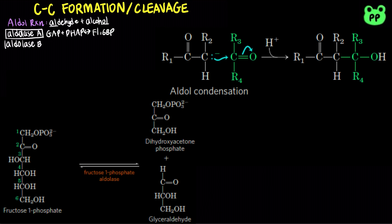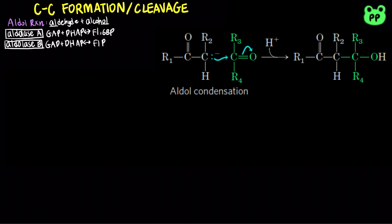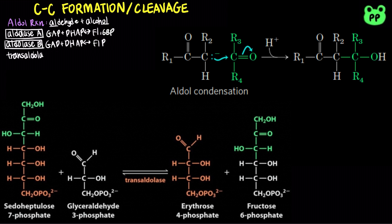Aldolase B is part of the feeder pathway in which fructose enters glycolysis. Fructose-1-phosphate is cleaved into glyceraldehyde and dihydroxyacetone phosphate. Another example of aldol condensation takes place in the non-oxidative phase of the pentose phosphate pathway, in which transaldolase interconverts sedoheptulose-7-phosphate and glyceraldehyde-3-phosphate with erythrose-4-phosphate and fructose-6-phosphate.